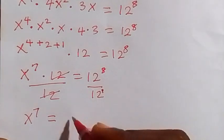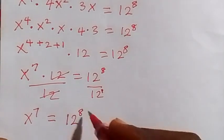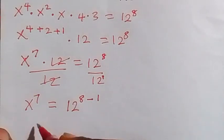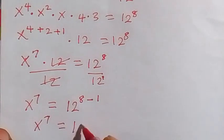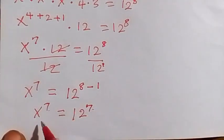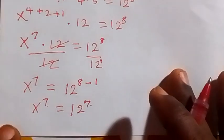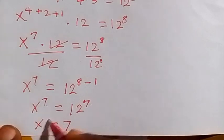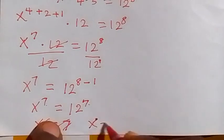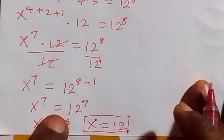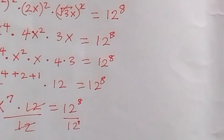We have x raised to the power 7 equals 12 raised to the power 8 minus 1, which is 12 raised to the power 7. Since the powers are the same, we can equate the bases, and we conclude that x equals 12.